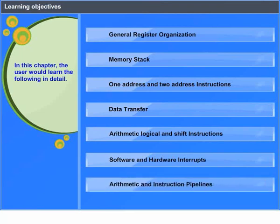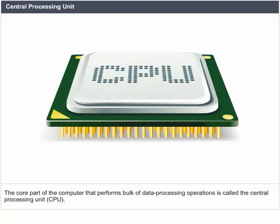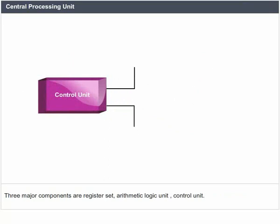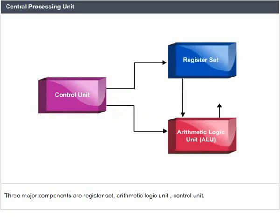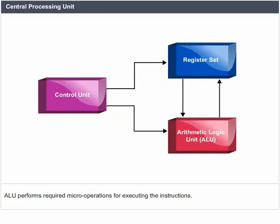Arithmetic and Instruction Pipelines. Central Processing Unit: The core part of the computer that performs the bulk of data processing operations is called the Central Processing Unit (CPU). Its three major components are the Register Set, Arithmetic Logic Unit, and Control Unit. The Register Set stores intermediate data used during execution of instructions; the ALU performs required micro-operations for executing instructions; and the Control Unit monitors the transfer of information among the registers and the operations at the ALU.